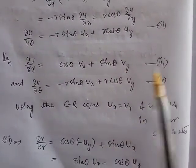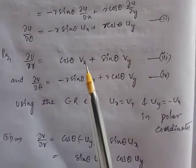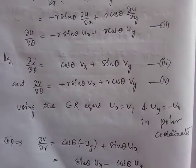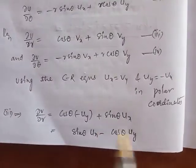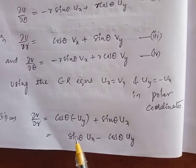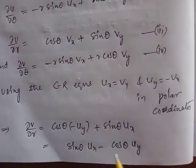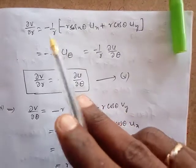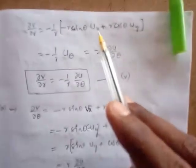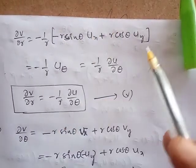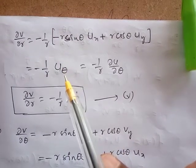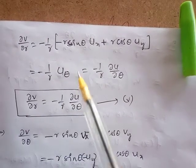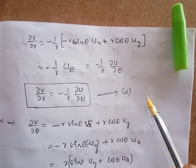Now consider the third equation: ∂V/∂r = cosθ·Vx + sinθ·Vy. Using the Cauchy-Riemann equations, Vx = -Uy and Vy = Ux. Substituting those values and multiplying and dividing by r, we get: ∂V/∂r = (-1/r)·(-r·sinθ·Ux + r·cosθ·Uy), which equals (-1/r)·∂u/∂θ. This is the first Cauchy-Riemann equation in polar form.